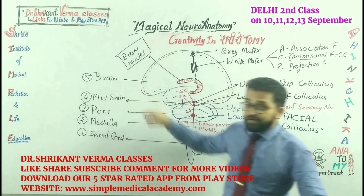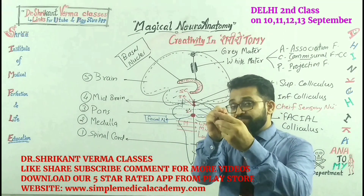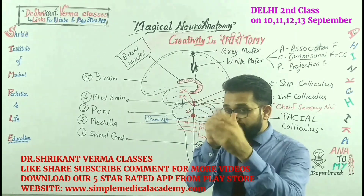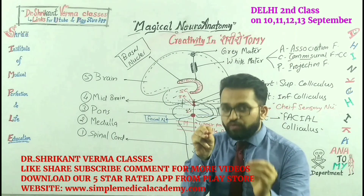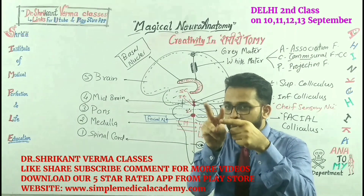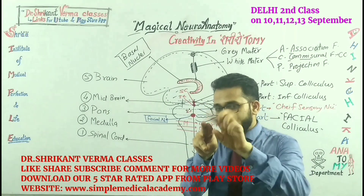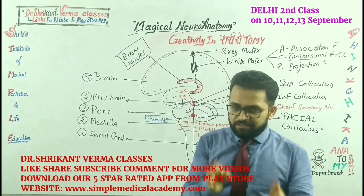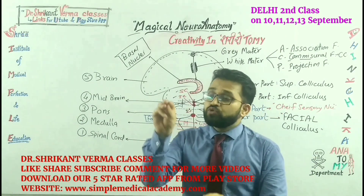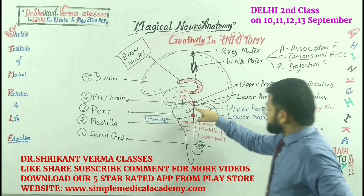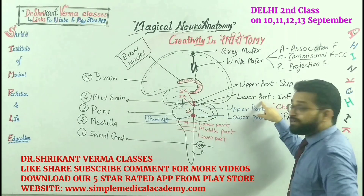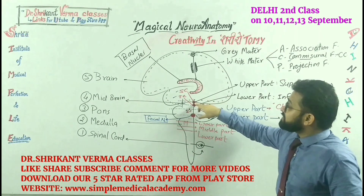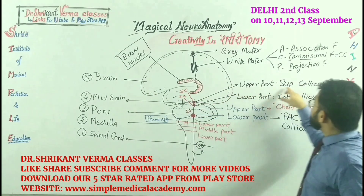After that, we are cutting the midbrain. In the midbrain, on the posterior side, there are four structures, four elevations. That's why these are known as the corpora quadrigemina — they are forming one body. They consist of the upper two elevations, which are known as the superior colliculus, and the inferior two elevations, known as the inferior colliculus. The lower part of the midbrain is characteristically known as the transverse section of the midbrain at the level of the inferior colliculus, and the upper part is known as the transverse section of the midbrain at the level of the superior colliculus.